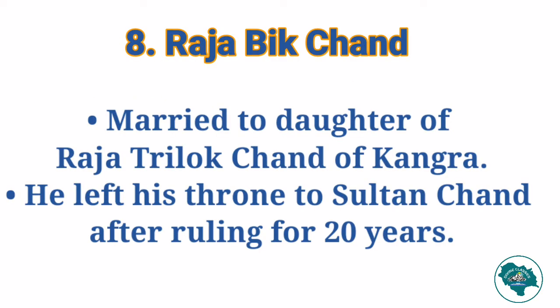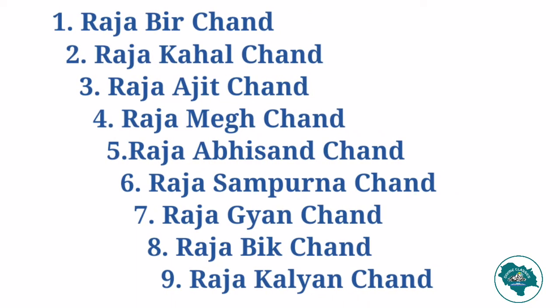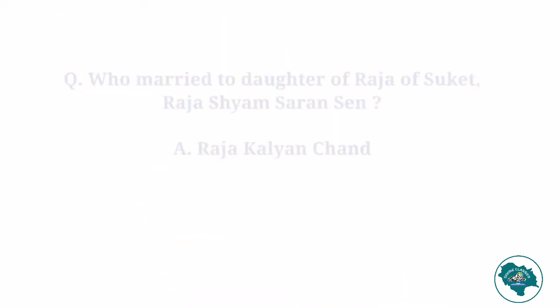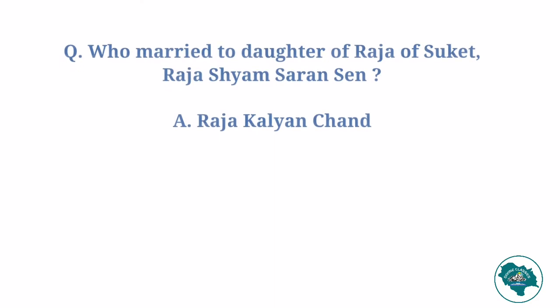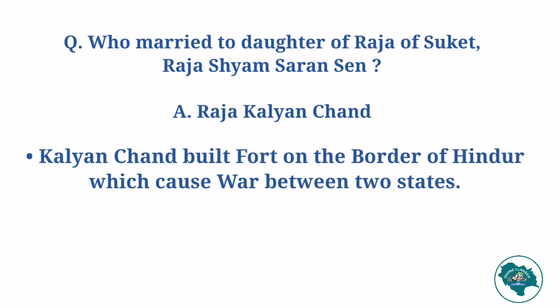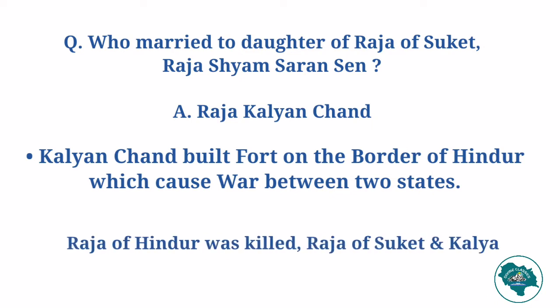Bikchand married the daughter of Raja Tirulogchand of Kangra. Raja Bikchand left his throne to Sultanchand after ruling for 20 years. After him came Raja Kalyanchand, who married the daughter of Raja of Sukhet, Raja Shyam Saransane. He built a fort on the border of Hindur, which caused war between the two states, and in this battle the Raja of Hindur was killed.